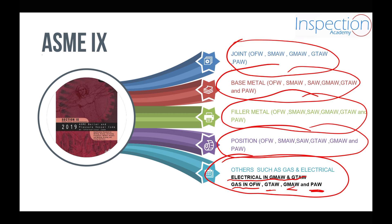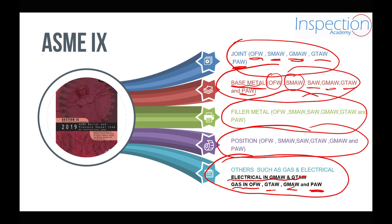From this we have realized that not all welding processes have the same variables. For example, the base metal variable applies to oxy-fuel welding, shielded metal arc welding, submerged arc welding, gas metal arc welding, gas tungsten arc welding, and plasma arc welding. While the joint variable applies to oxy-fuel welding, shielded metal arc welding, gas metal arc welding, gas tungsten arc welding, and plasma arc welding. So we need to check the essential variables for each welding process.